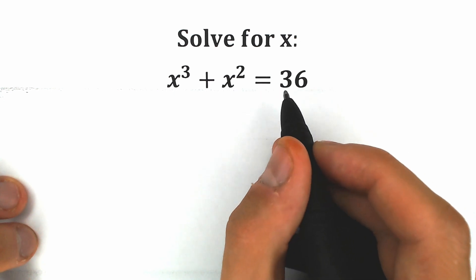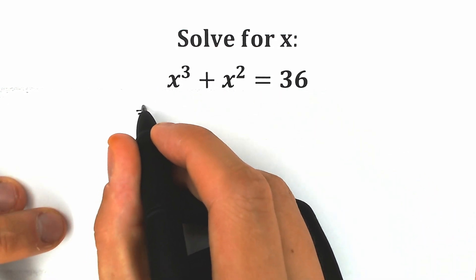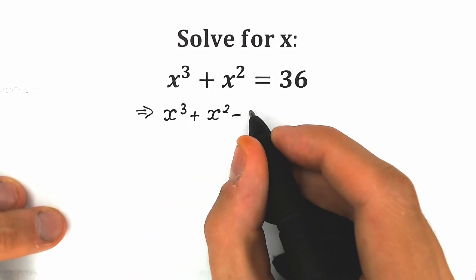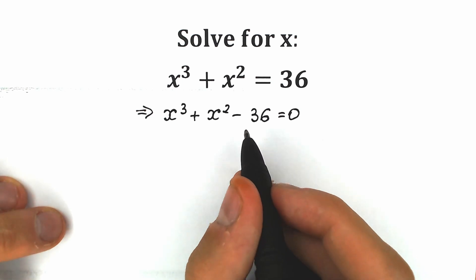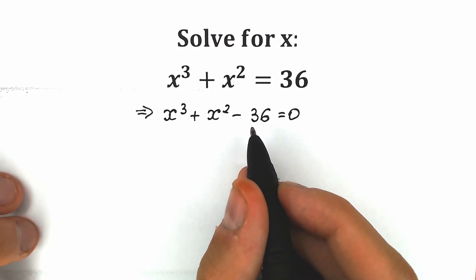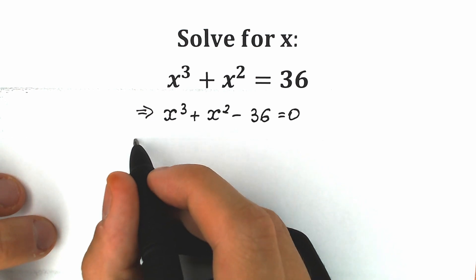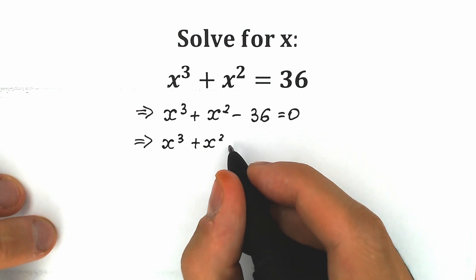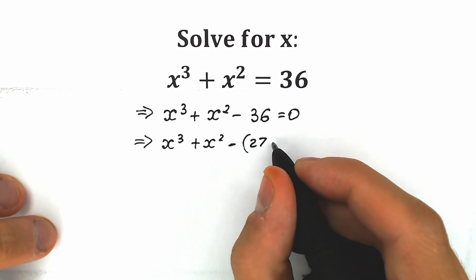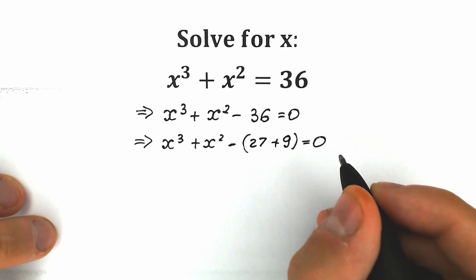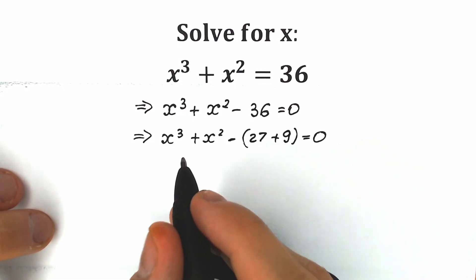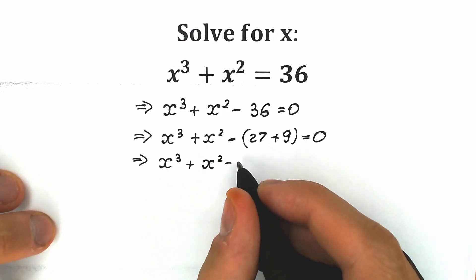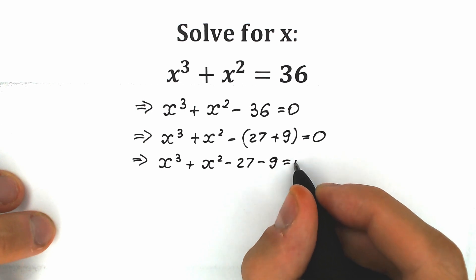First of all, let's bring the 36 from the right side to the left side. As a result, we have x³ + x² - 36 = 0. Now instead of 36, it's a great idea to write 27 + 9. So we have x³ + x² - 27 - 9 = 0. This changes nothing because 27 + 9 is absolutely the same value.